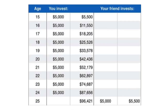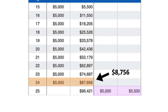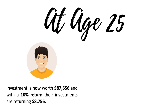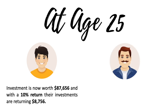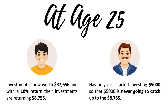If we look at the year after person one stops investing, their portfolio is worth $87,656. This means that with a 10% return, their portfolio grows by $8,756 the following year without contributing more — which is more than person two's $5,000 contribution. Person one's investment is now worth $87,000, and with a 10% return, it's returning $8,756. Person two has only just started investing $5,000, so that $5,000 is never going to catch up to the $8,756 that person one's investment is growing by.